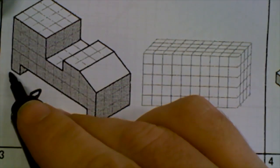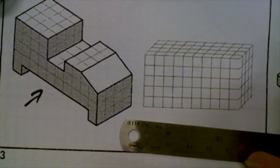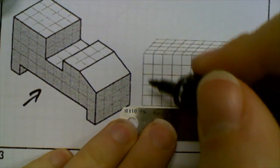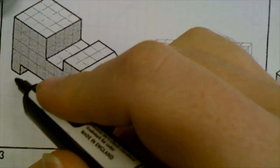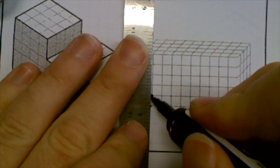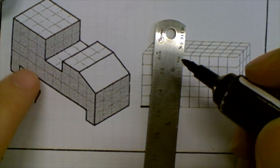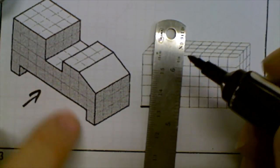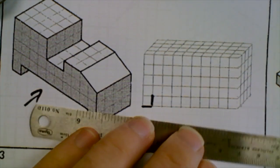We can see that we start with a one block line here. So I'll put that in. It goes one block up and then we go one, two, three, four, five, six, seven, eight blocks across.